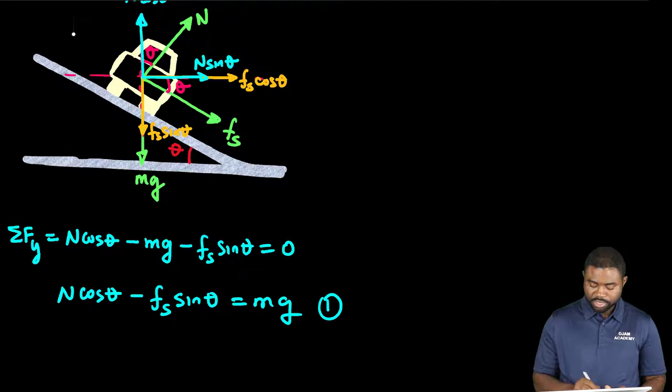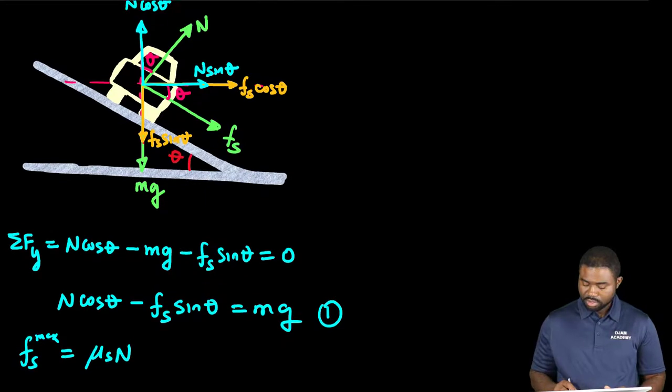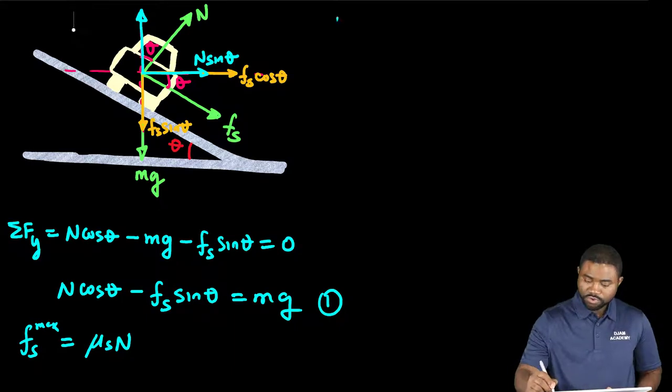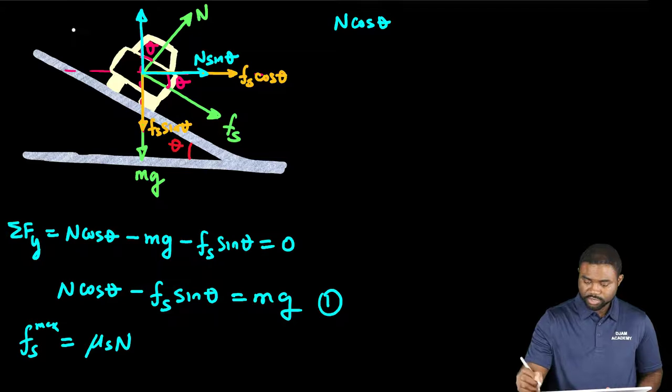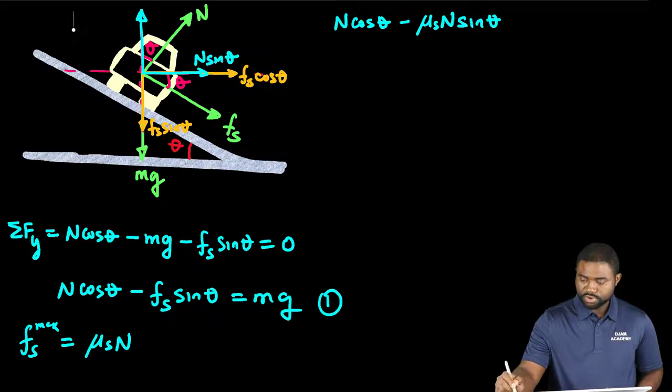But also keep in mind that Fs max is equal to mu_s N. Therefore, N cosine theta minus mu_s N sine theta will be equal to mg.